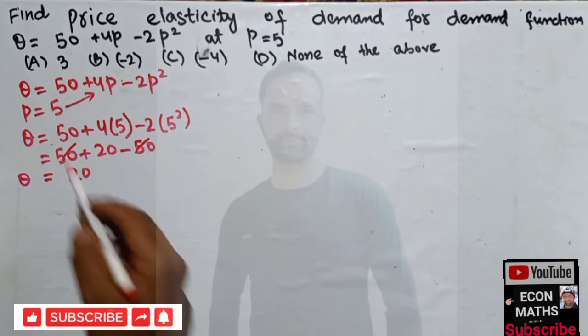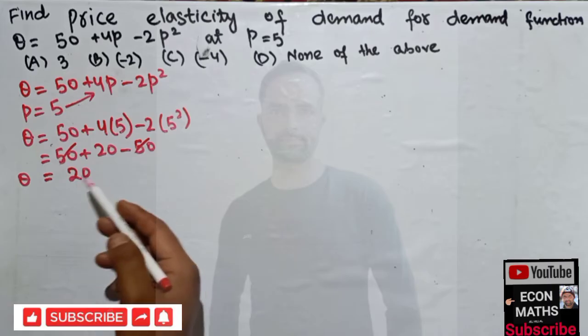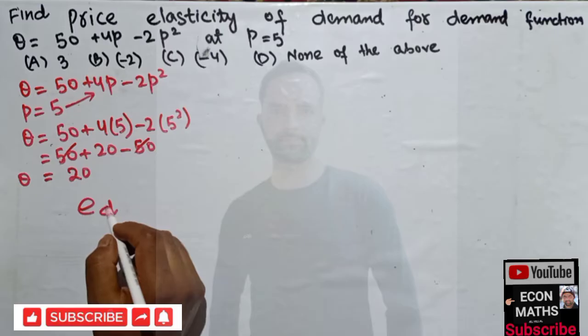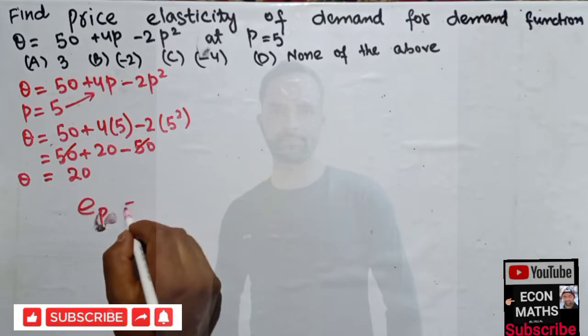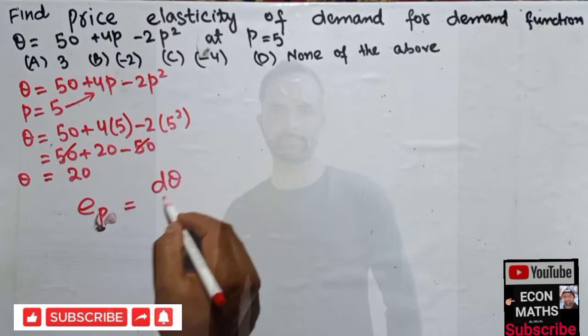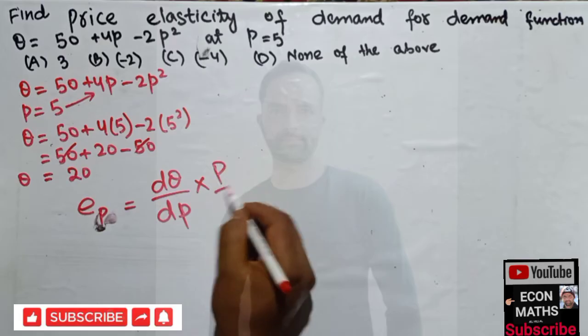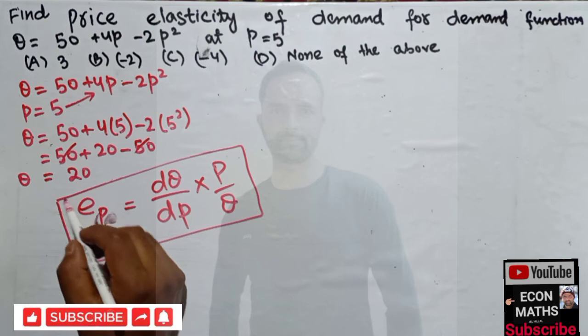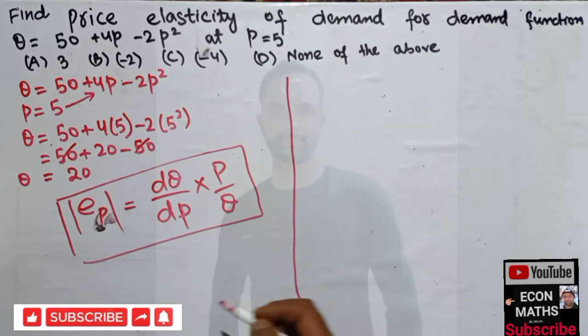This is our quantity. Price is given, quantity is also found, and elasticity of demand is given by the formula ep = dq/dp × p/q. This is the price elasticity of demand formula and we take the absolute value always. We will use this formula in finding the price elasticity of demand.